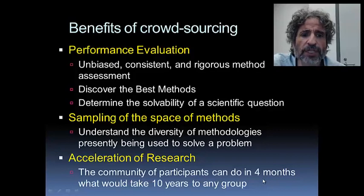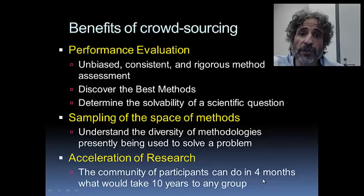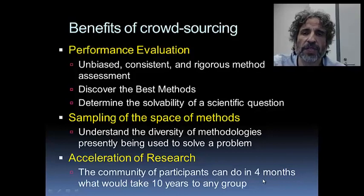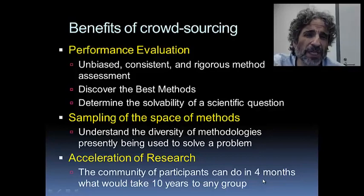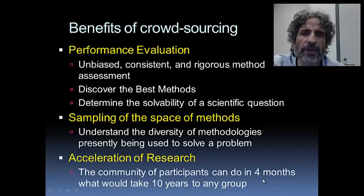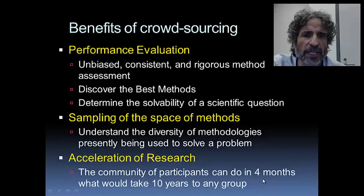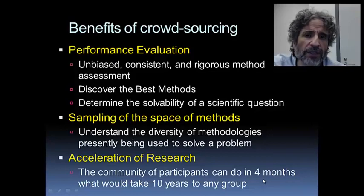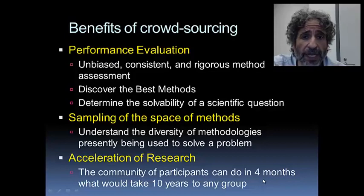For example, can I predict the cytotoxicity of a drug given a person's SNPs — mutations in their DNA? We don't know that we can do that. But if we invite a hundred groups to try and nobody is able to do it, then it's very likely that the problem is unsolvable with the data at hand. So determining the solvability of a scientific question is one of the things we can start to discuss when we do a crowdsourcing effort.